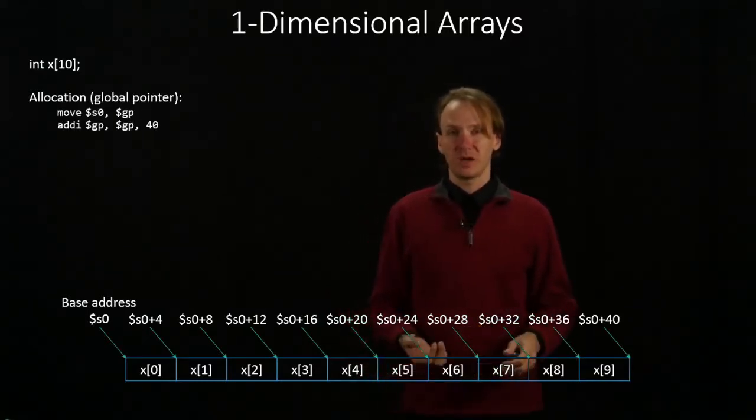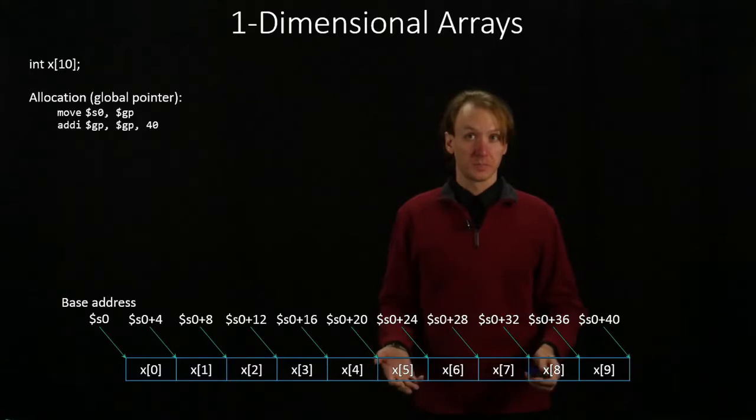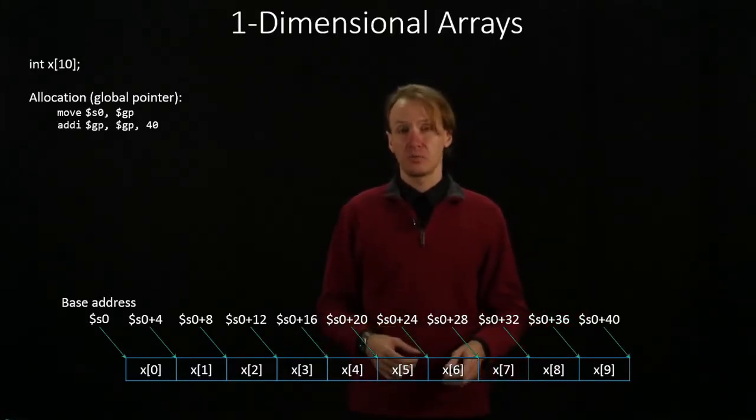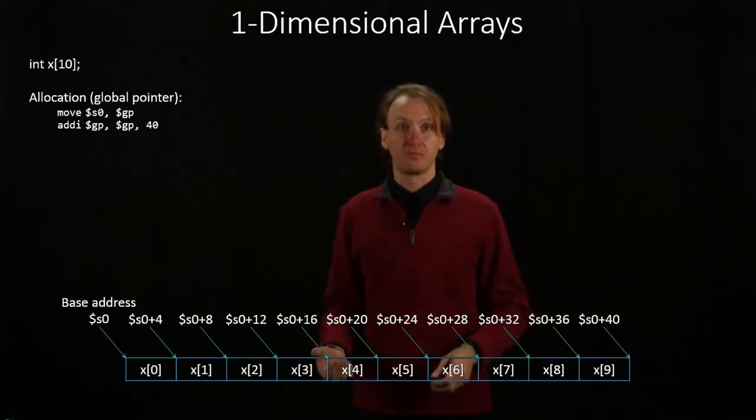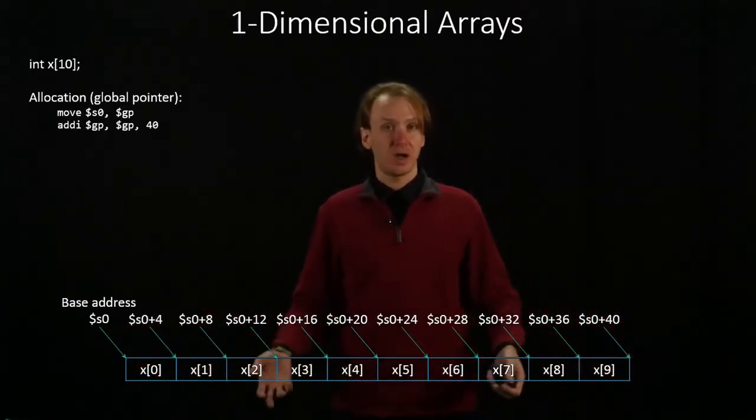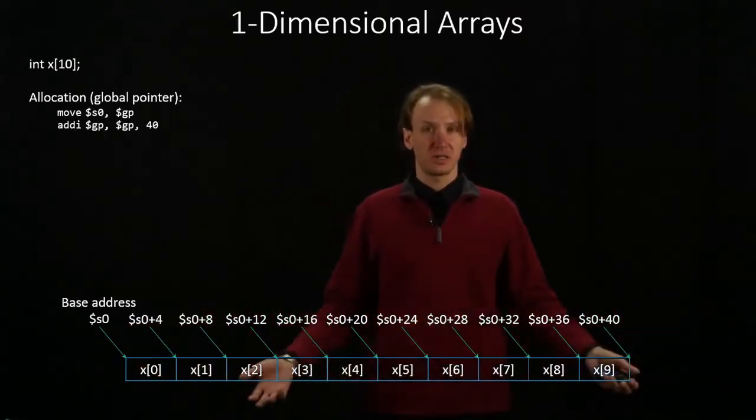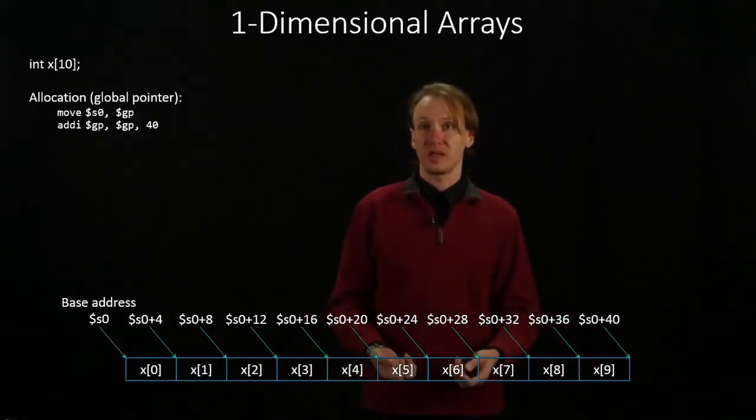But I could have done this just by manipulating the global pointer. So I could have just copied the global pointer into s0, and then incremented the global pointer by 40. And 40 is the size of my array, so incrementing it by 40 allocates 40 bytes of space for me.